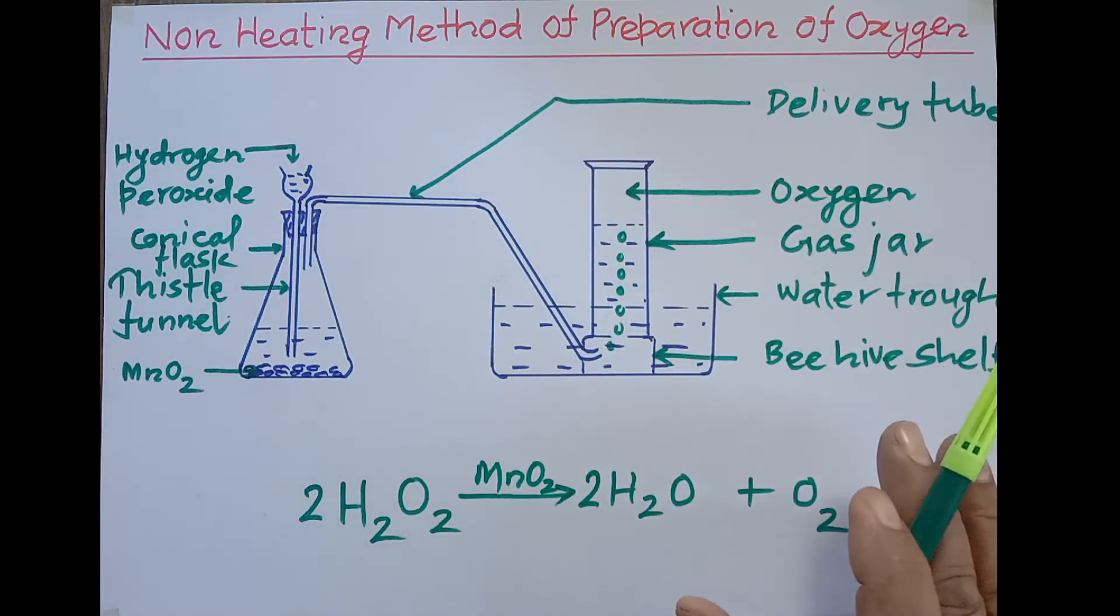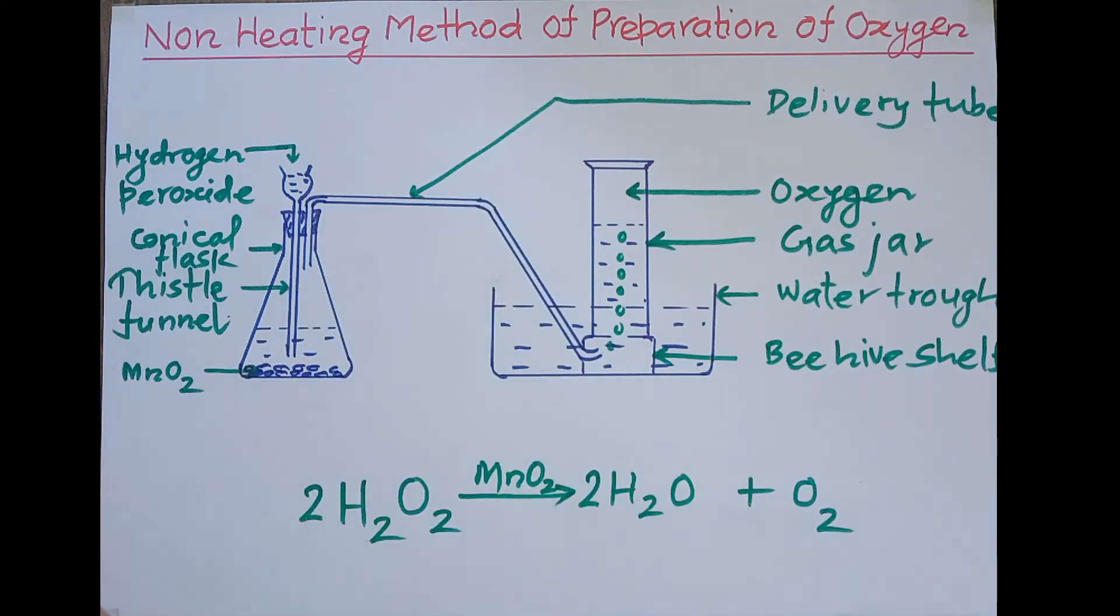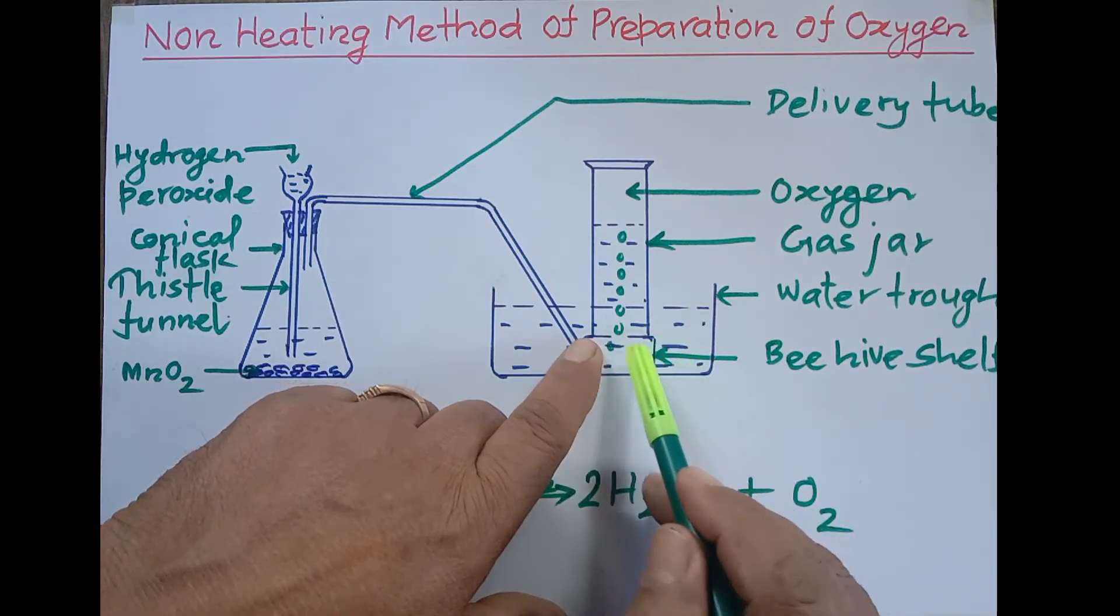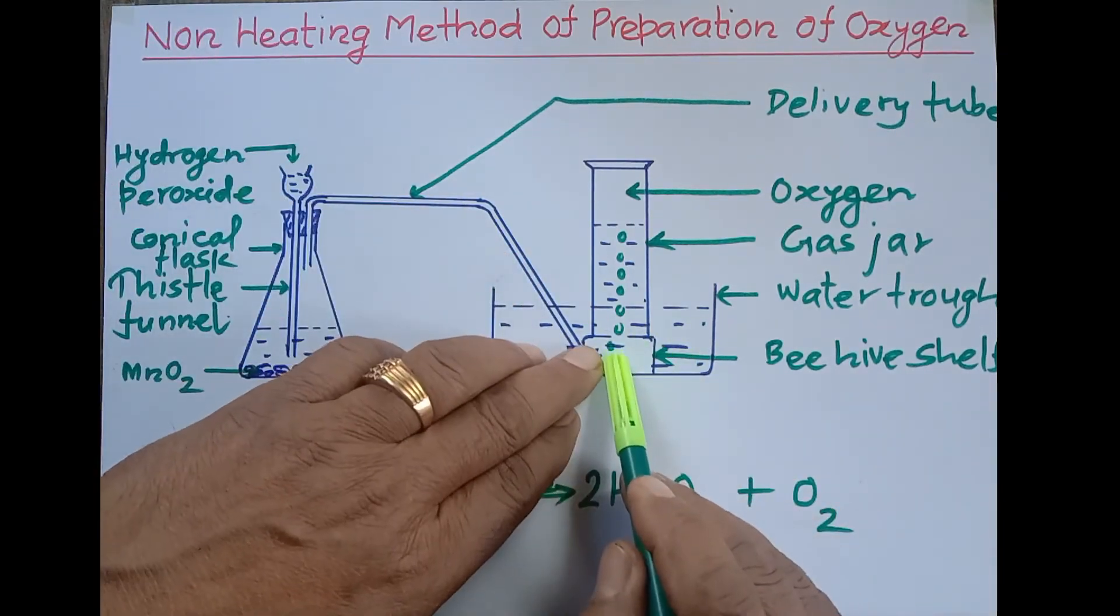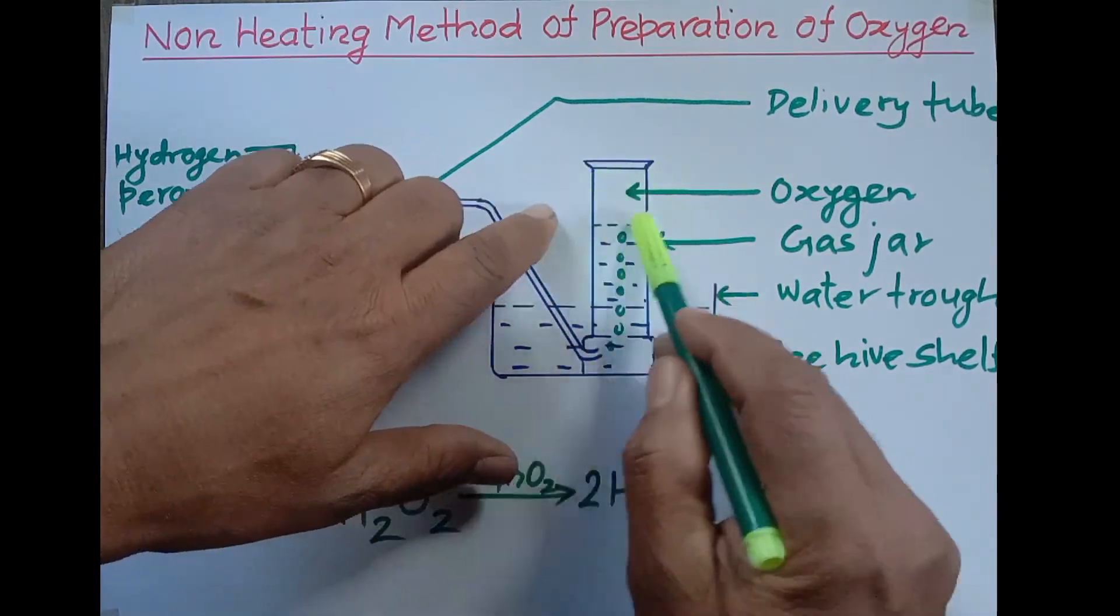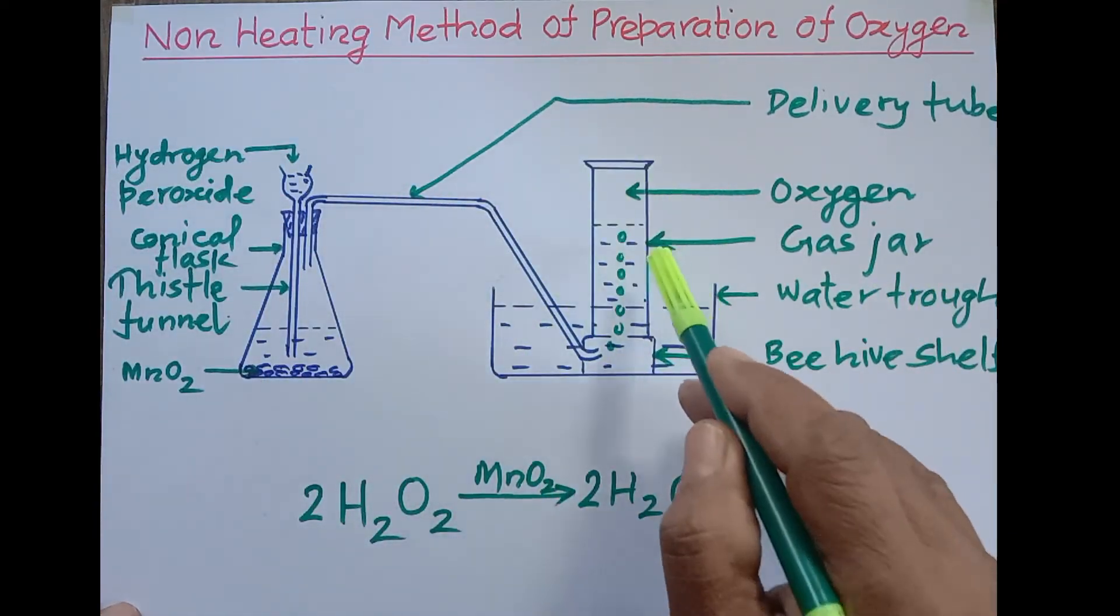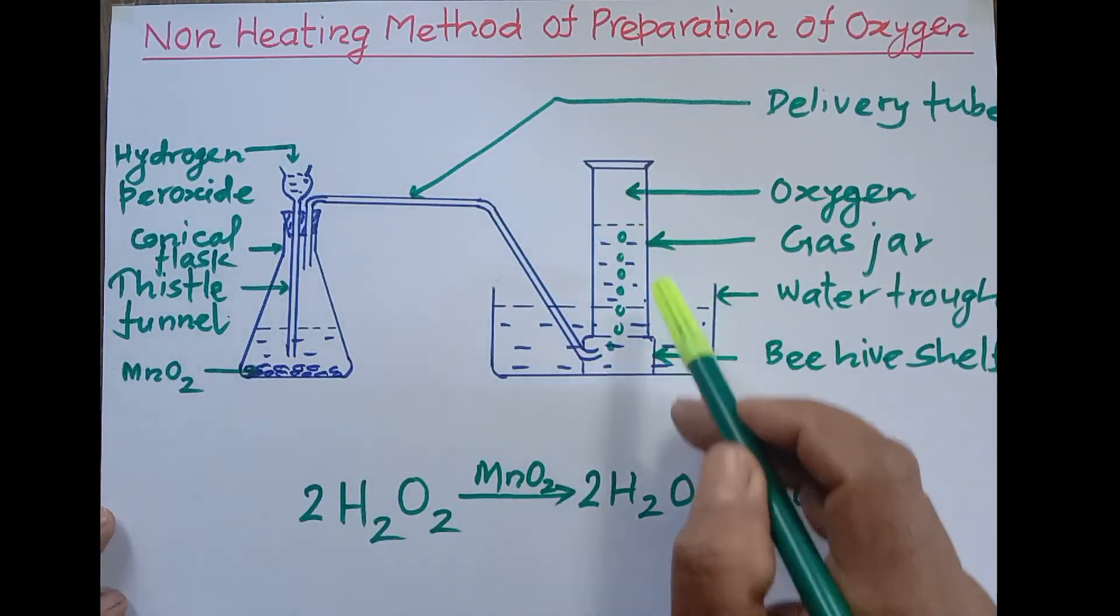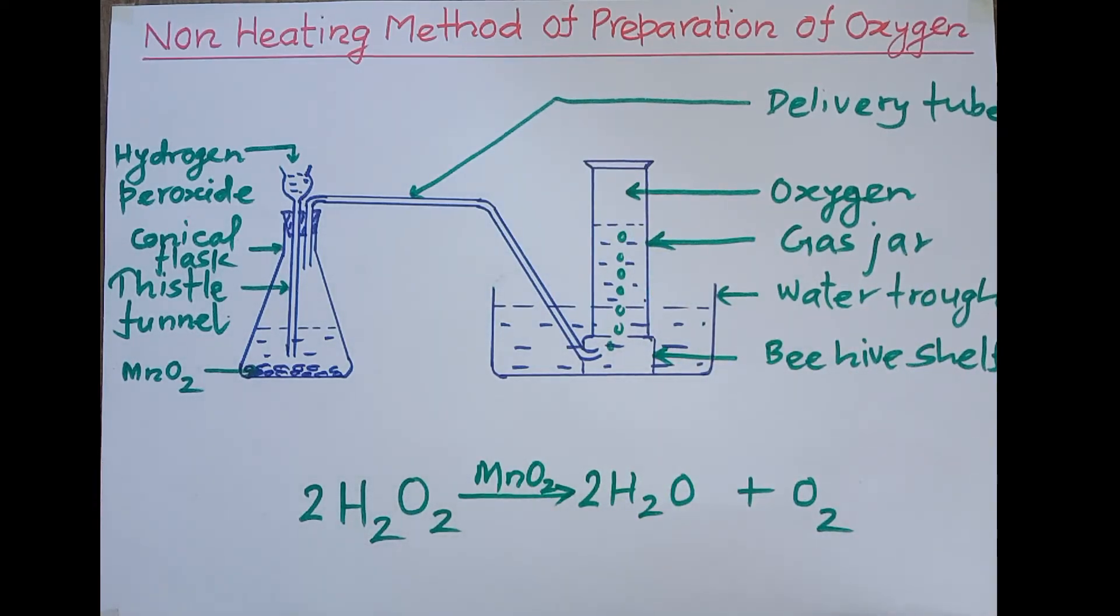The gas jar's mouth should be covered, and then we have to invert it into this beehive shelf, inserting our hand into the water. There must not be air inside this gas jar. Air should not enter into the gas jar, otherwise our gas will be a mixture of air and oxygen gas. We have to take care of all these matters.